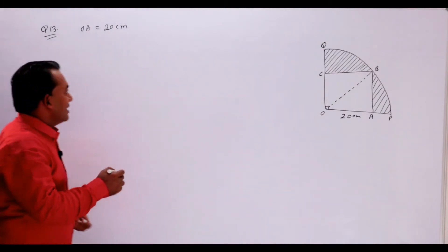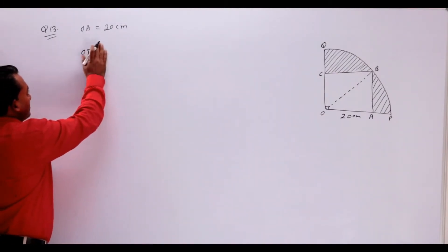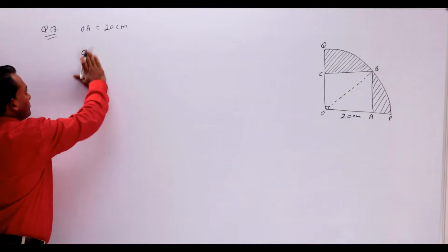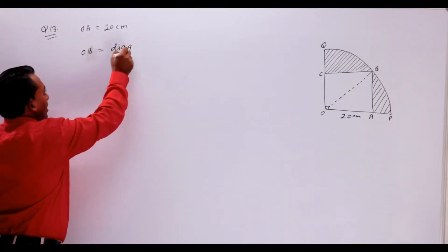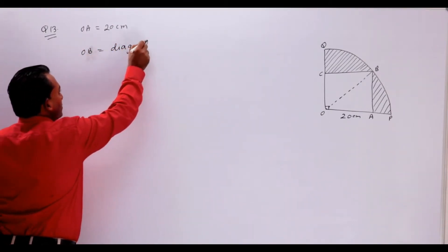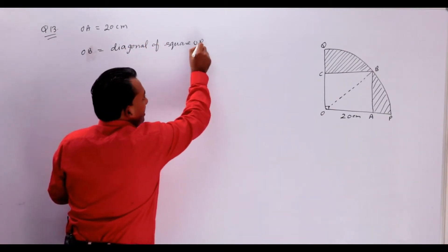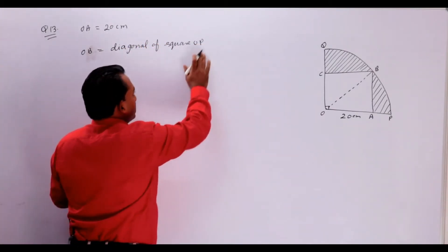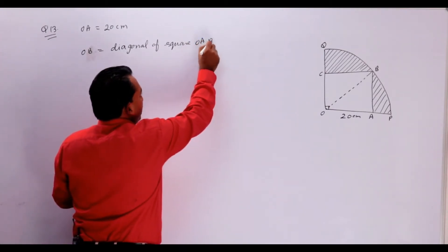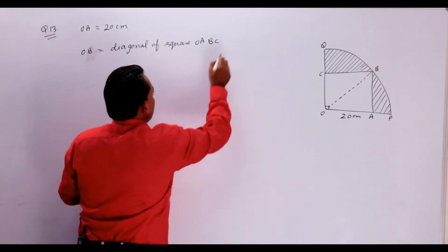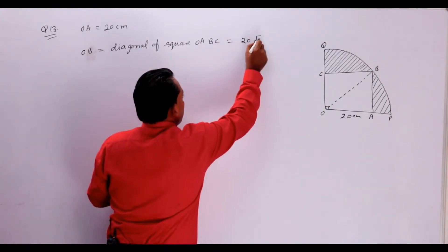Theek hai na? Toh aap OB likh sakte hain. OB is equal to diagonal of square OABC, matlab 20 root 2.